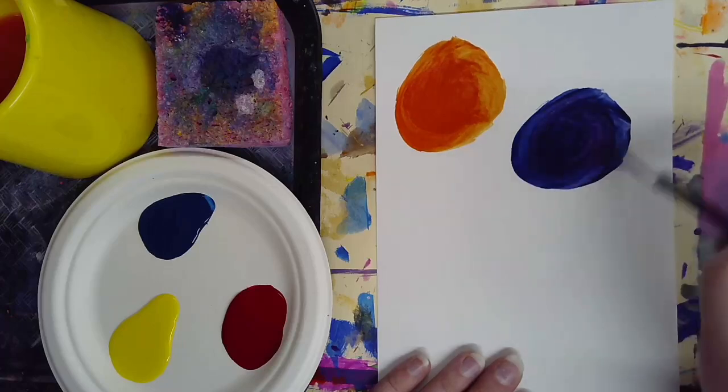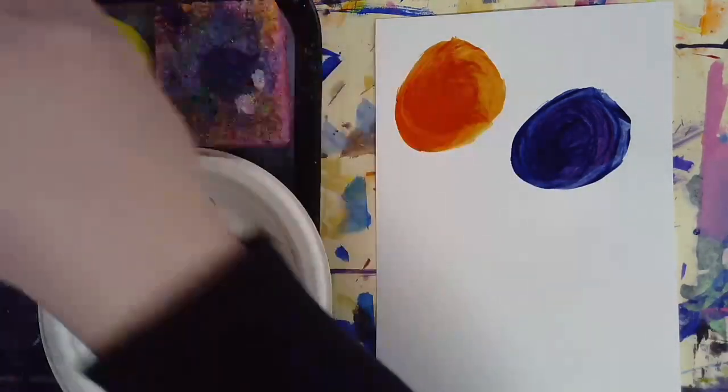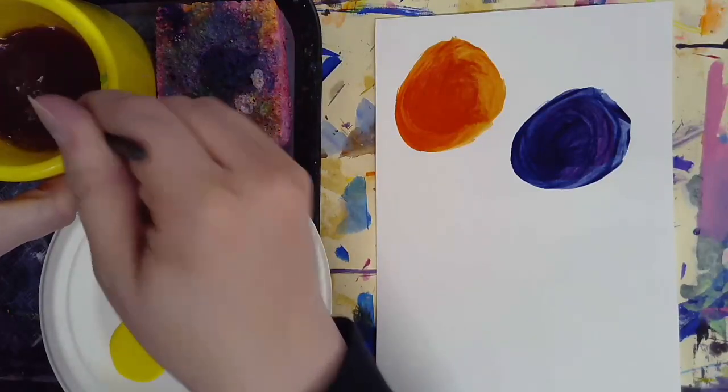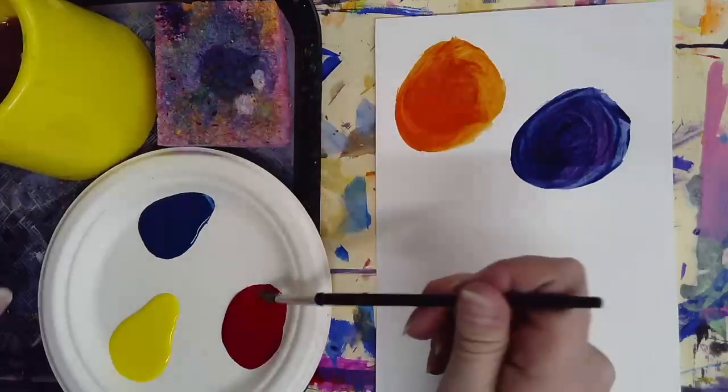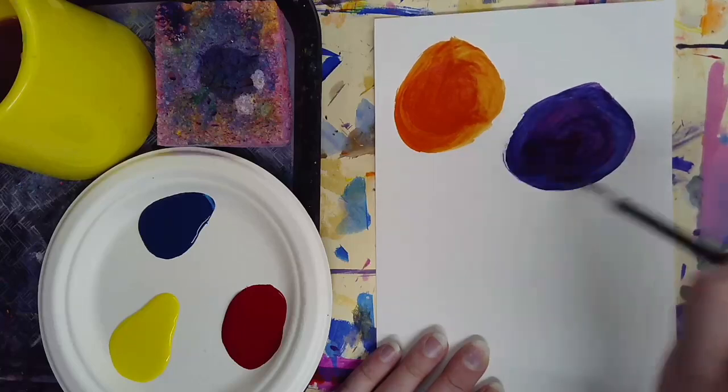The magenta and blue together are making purple. If you feel like your purple is a little bit too close to blue, you could add more red. If you feel like your purple is a little bit closer to red, you could add more blue.